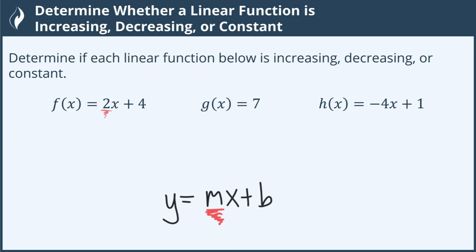For f of x, our slope is 2. Because our slope is 2, and that's a positive number greater than 0, that means the function is increasing.